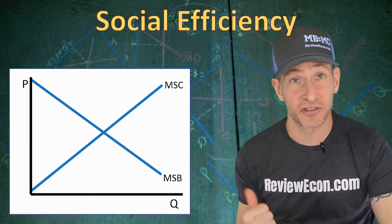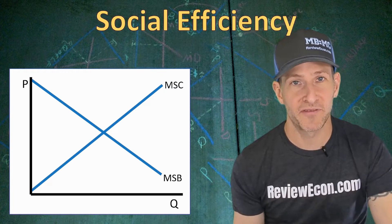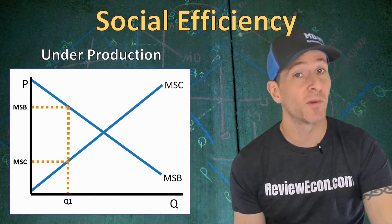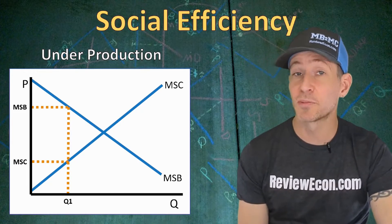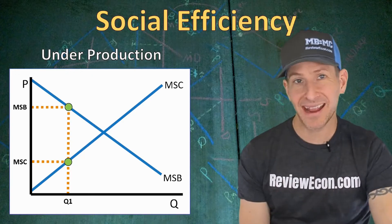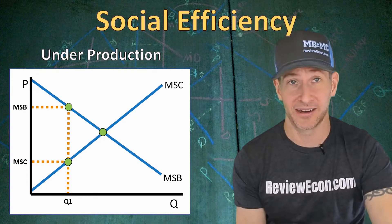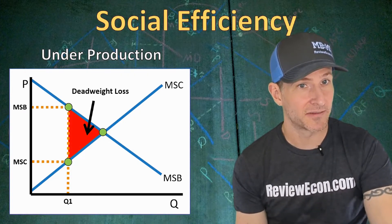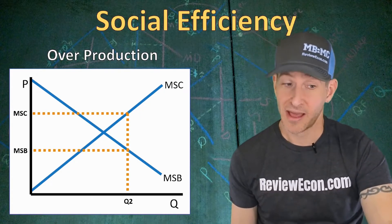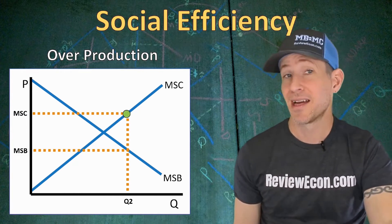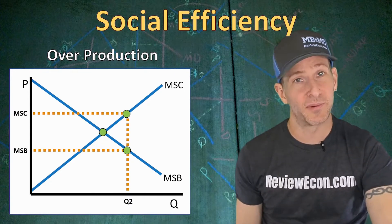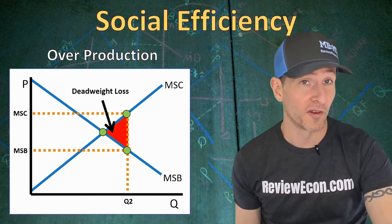If we graph it out, we have the marginal social cost curve sloping upward and the marginal social benefit curve sloping downward. If we produce below the intersection of those two curves, the marginal social benefit is going to be greater than the marginal social cost, and we are underproducing within this market. Those three points — the marginal social cost, the marginal social benefit, and the MSB-equals-MSC point — give us a triangle of deadweight loss. If we produce more than that intersection, the marginal social cost will be greater than the marginal social benefit, and those three points give us a deadweight loss triangle for overproducing this product.